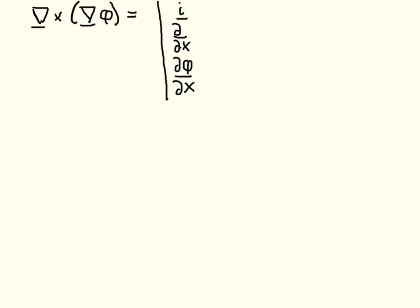i, the unit vector, the second row, the derivative with respect to x, and the third row is the first entry, the i component of this vector, and this is going to be the derivative with respect to x of phi.